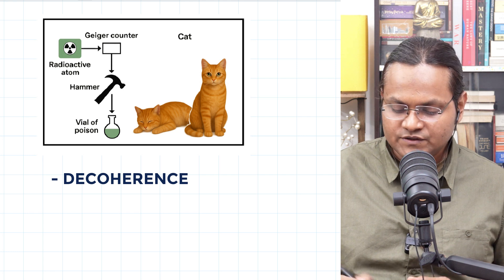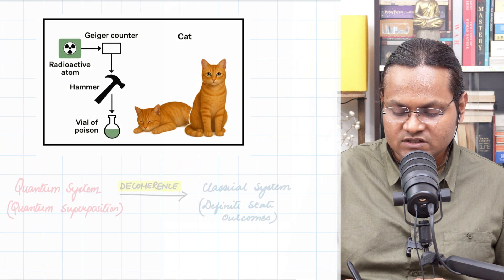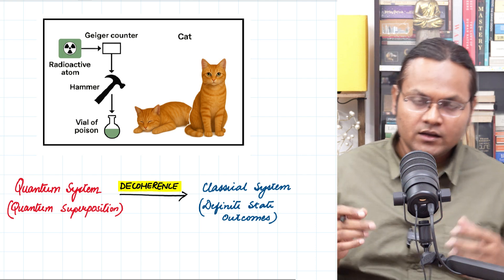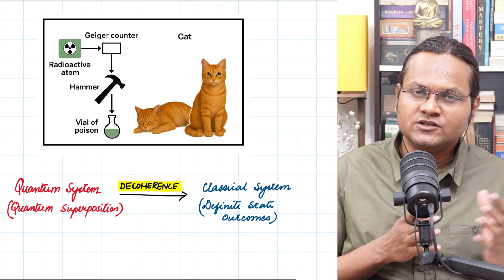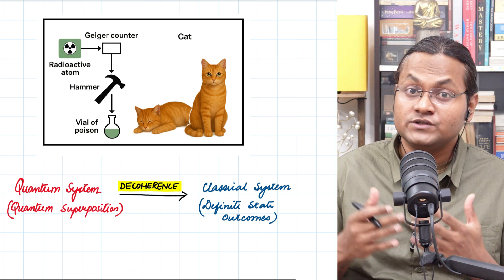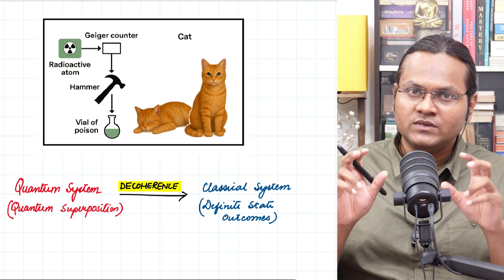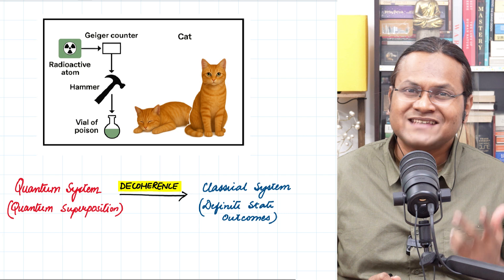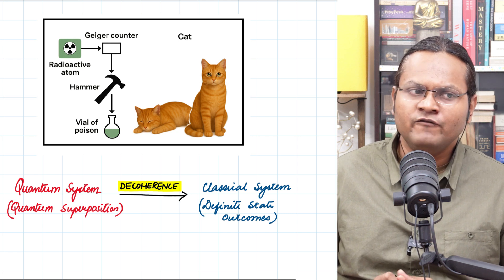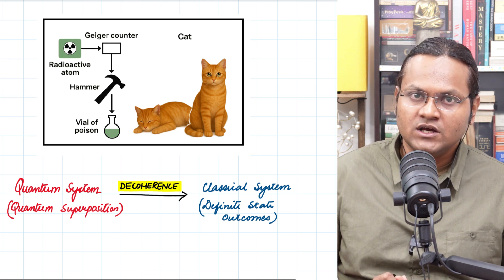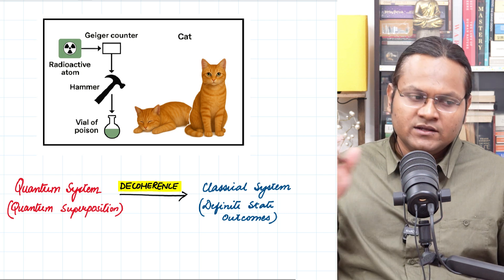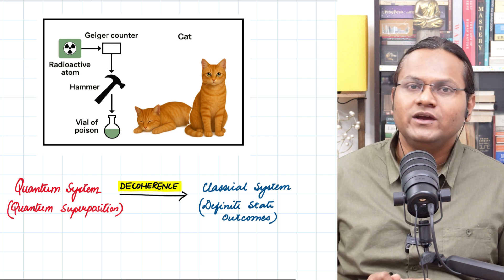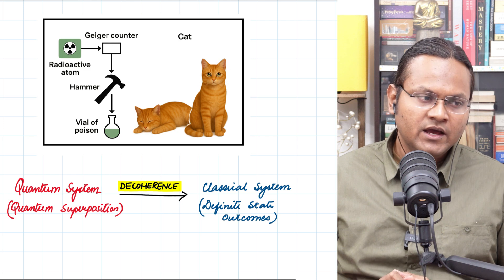You see, decoherence is the process through which a quantum system loses its quantumness. Essentially, the idea that a quantum system can exist in a superposition of mutually exclusive states. This quantumness is a property that is inherent to atomic particles, electrons, protons, atoms. But it is not obvious when it comes to classical systems. So somewhere along the line, there is a loss of this particular property. And that happens due to interaction with the environment. You see, particles do not exist in isolation.